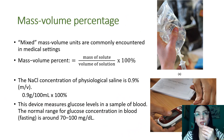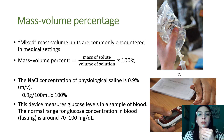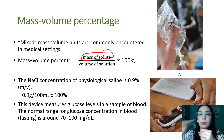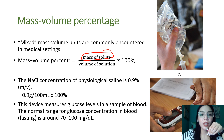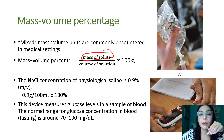Other concentration units you'll see include mass-to-volume percent, where you take the mass of the solute and divide by the volume of the solution. Earlier we discussed mass/mass and volume/volume; this is mixed. A typical example in healthcare is 0.9% mass/volume NaCl concentration in saline — that's 0.9 grams of sodium chloride per 100 mL of water.